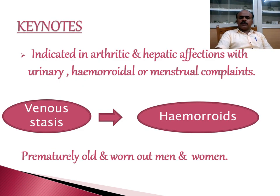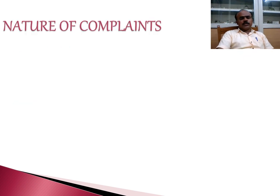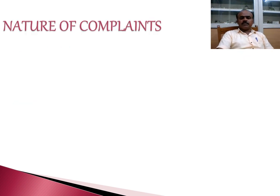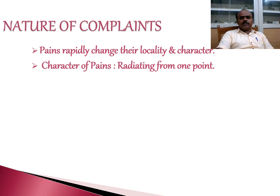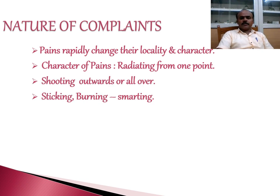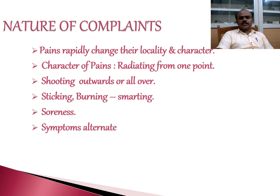It is indicated for arthritic and hepatic affections with urinary, hemorrhoidal, or menstrual components. In Berberis Vulgaris there is venous stasis, because of which it also produces hemorrhoids, for prematurely old and worn-out men and women. The pains rapidly change their locality and character. The character of the pains: they are radiating from one point, shooting outwards or all over — sticking, burning, and shooting pains — with soreness. Symptoms alternate.